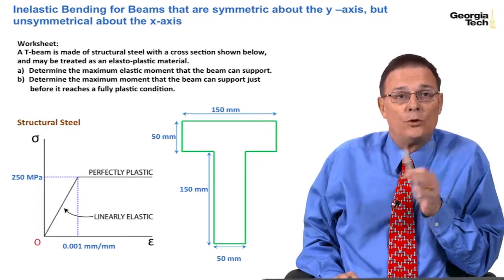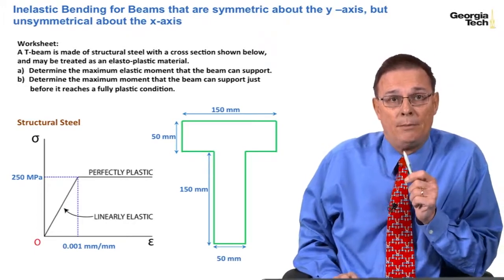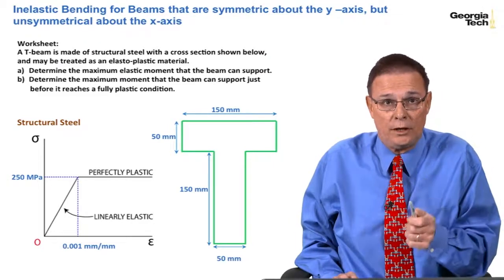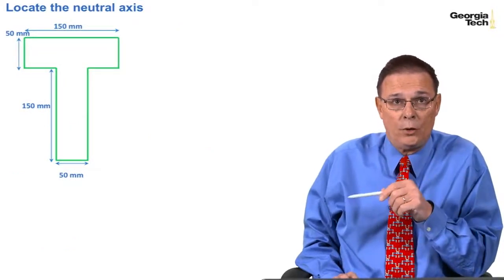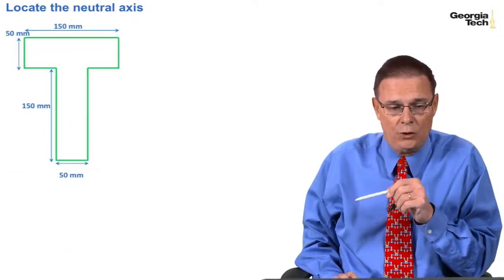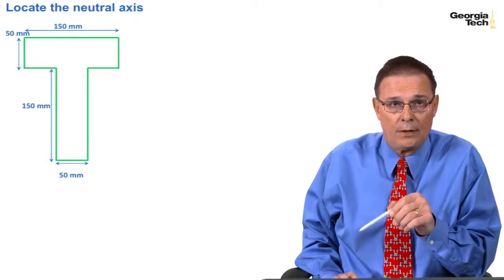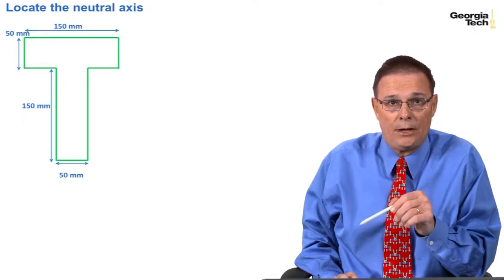And we're going to do two parts. Today we're going to do part A, which is to determine the maximum elastic moment that the beam can support. So this module will just look at the elastic action. And so the first thing I want you to do is to locate the neutral axis, and by now you should be pretty good at this because we've done some examples. Go ahead and do it on your own and then come back and see how you did.